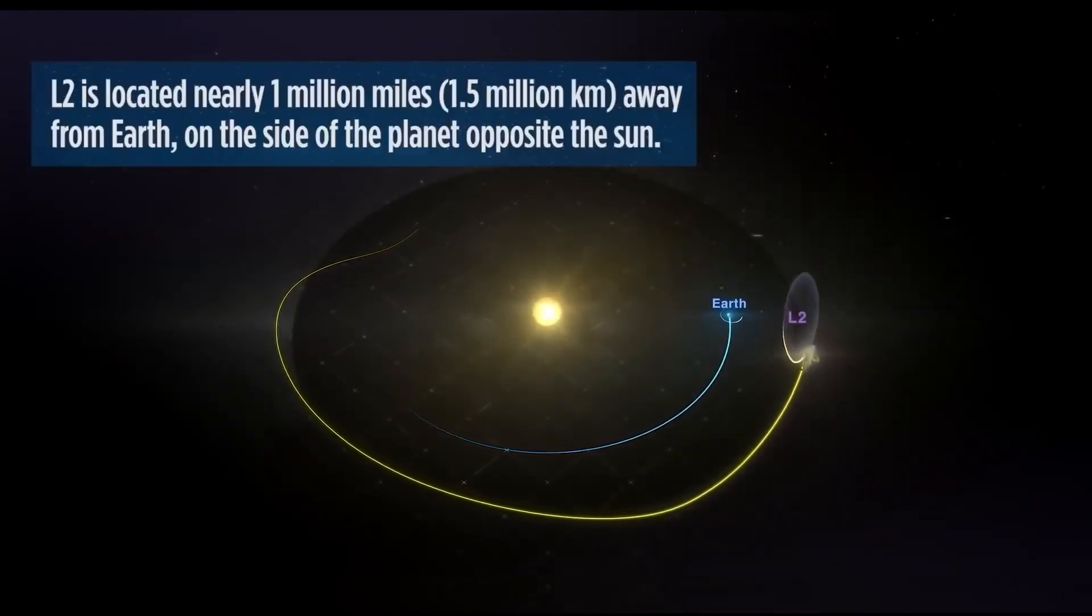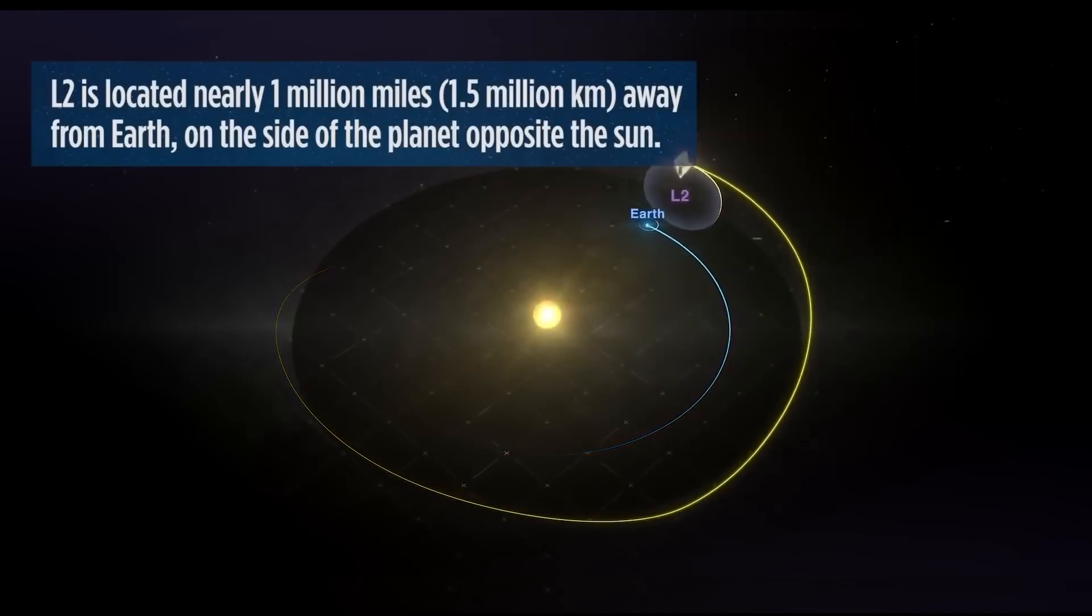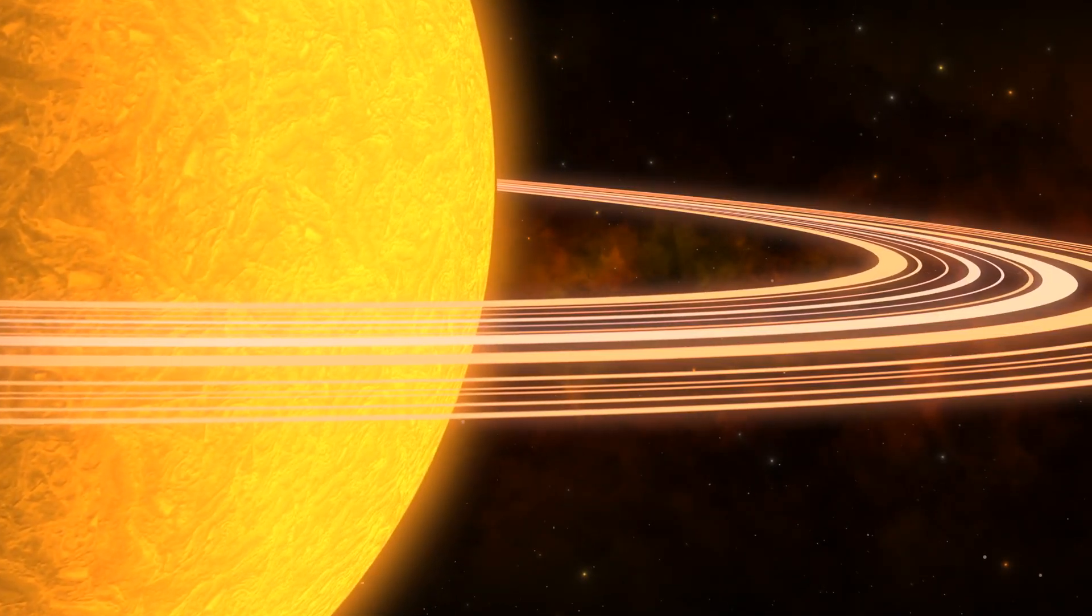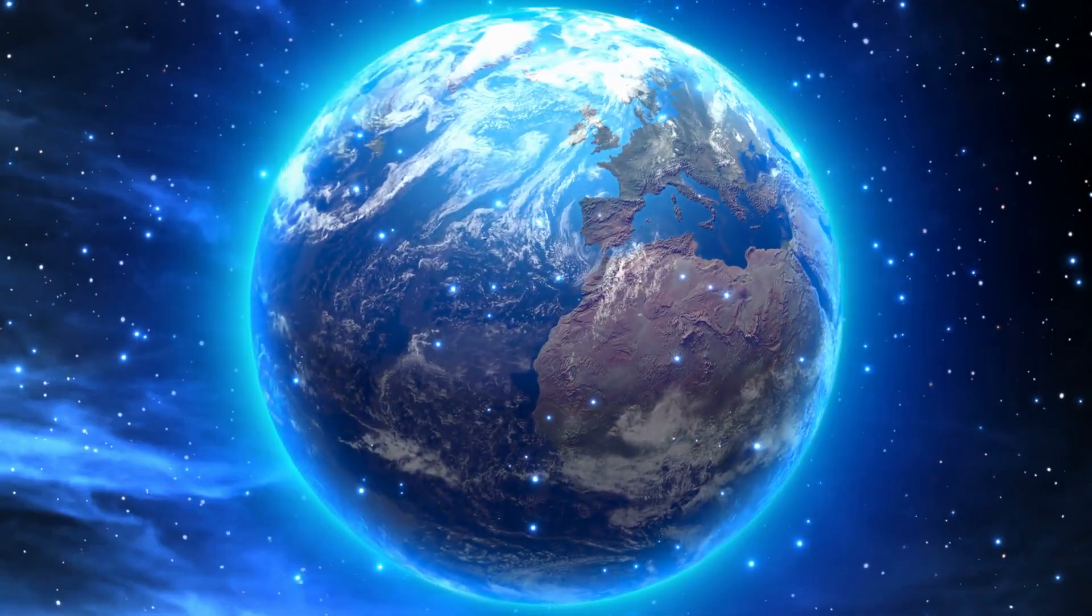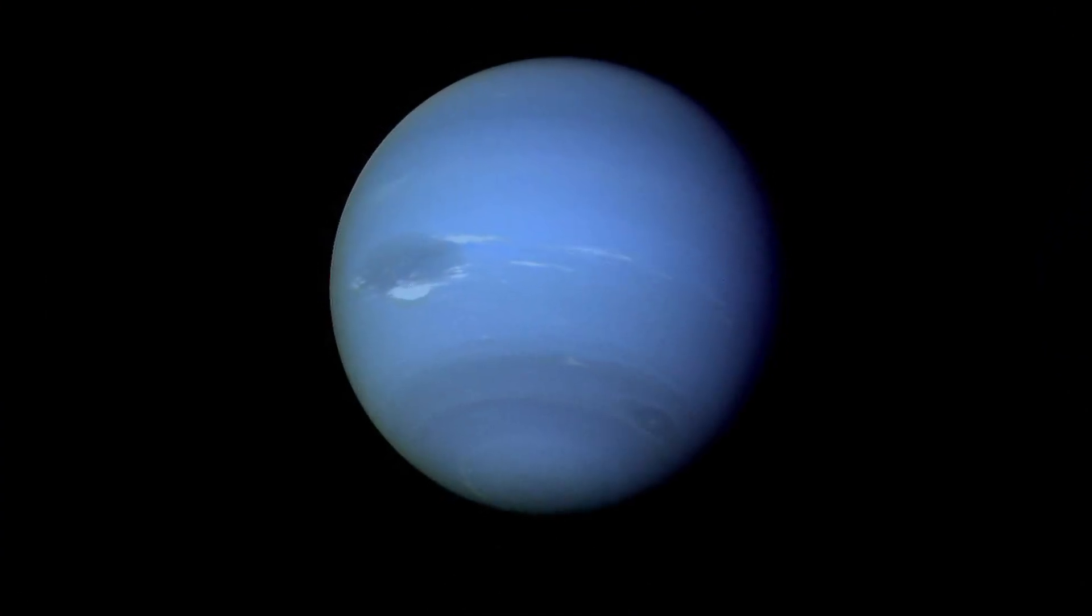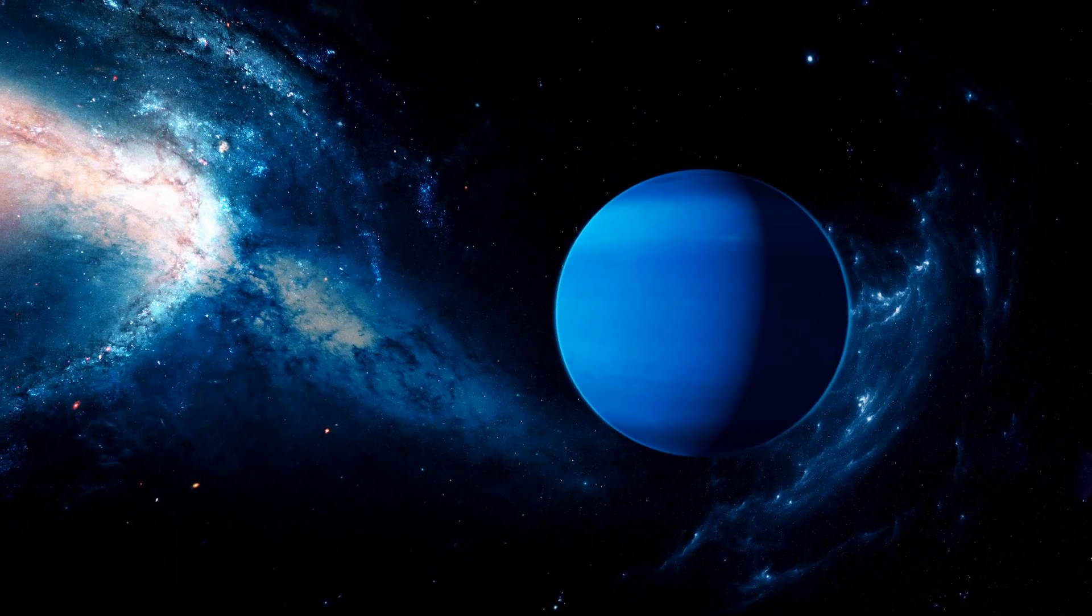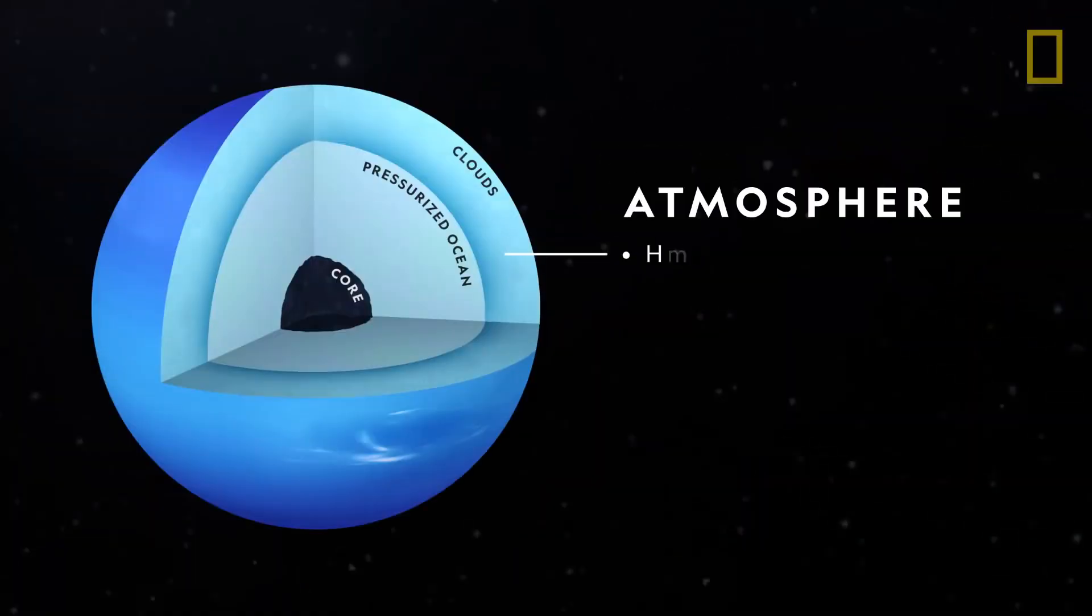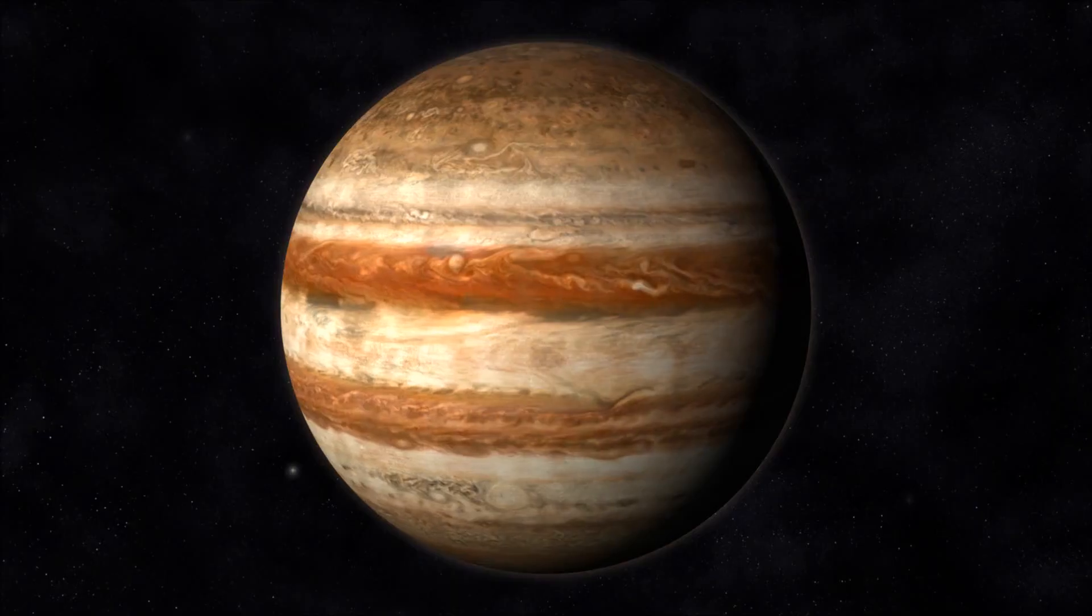Because of how faint and dim the sun appears from such a significant distance away, a scorching day on Neptune is equivalent to early nightfall on Earth. Neptune is known as an ice giant due to its interior chemical composition. Neptune is significantly richer in elements heavier than hydrogen and helium than Jupiter and Saturn.